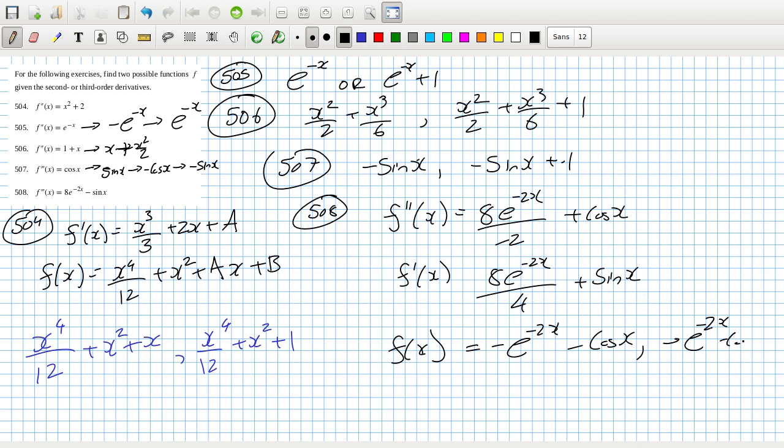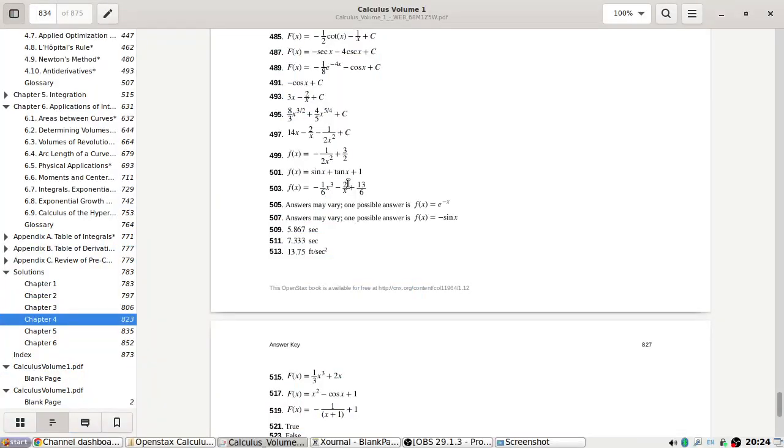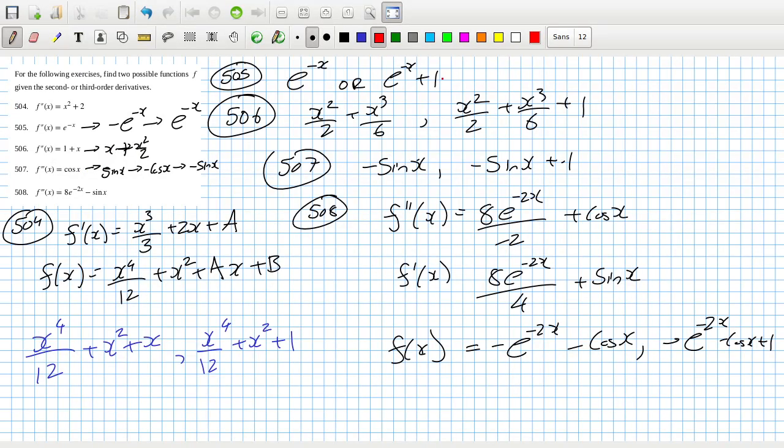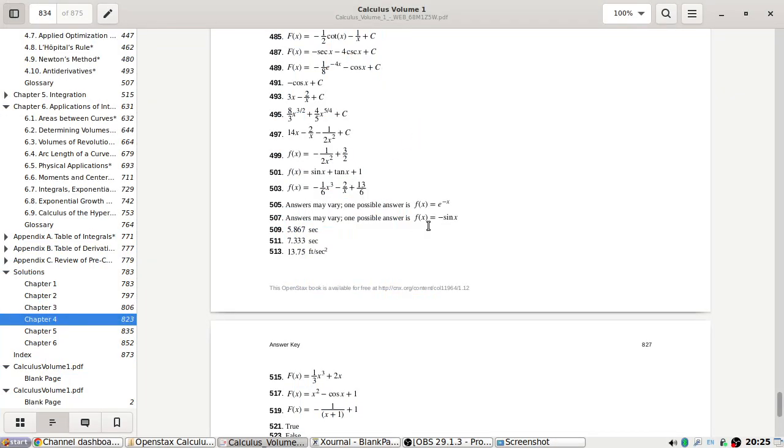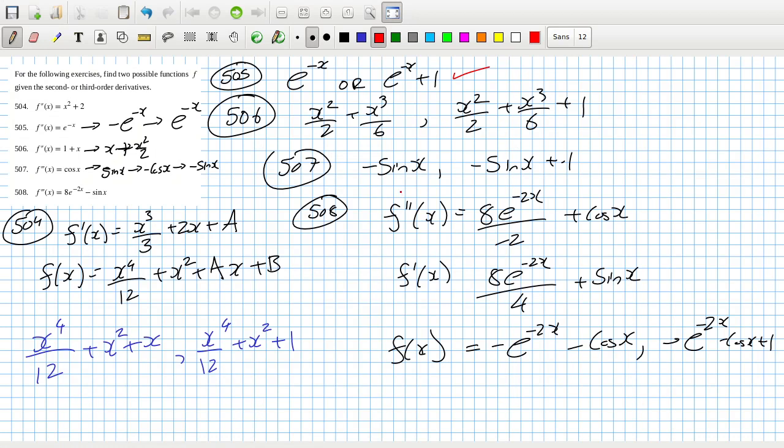Or guess what I'm going to do, minus e minus 2x minus cos x plus 1. Ain't I a stinker. e minus x is one possible answer, so is e minus x plus 1. And then 507: minus sine x yes, or minus sine x plus 1.